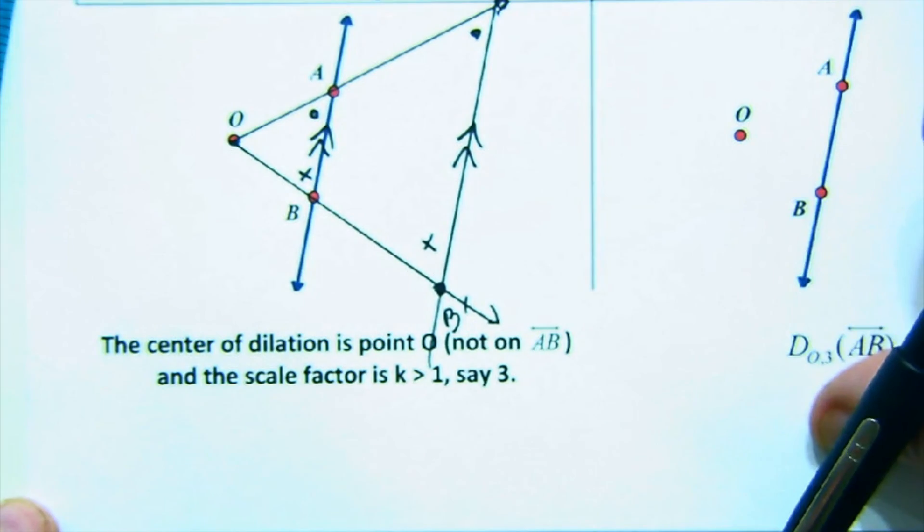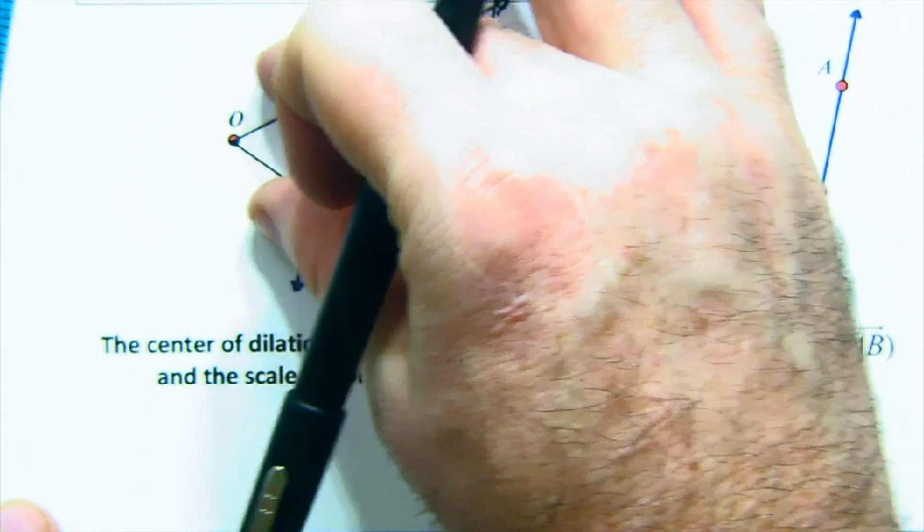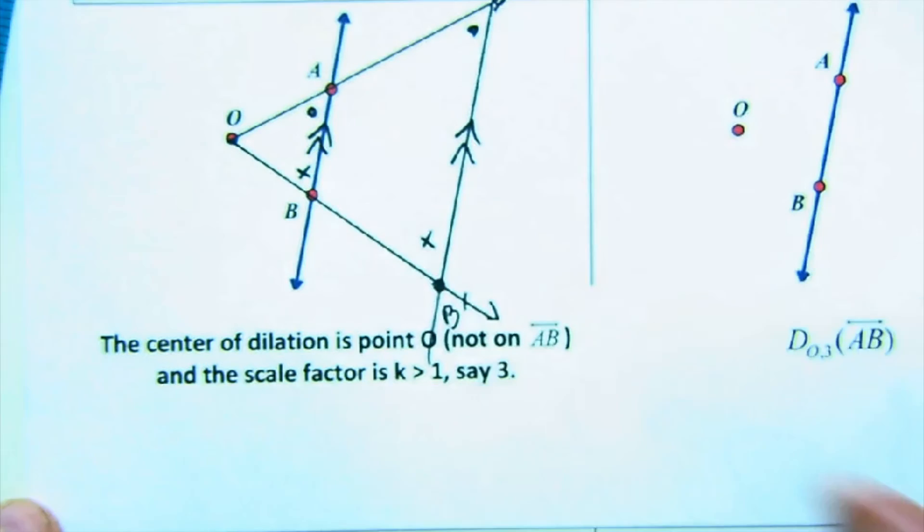And then a scale factor that's say a half or a third means it closer to that point.